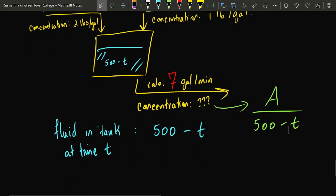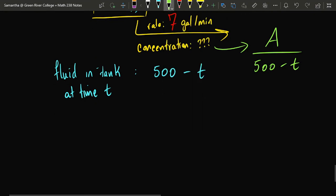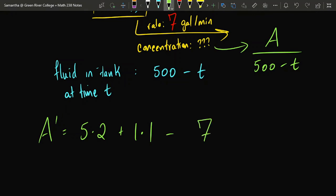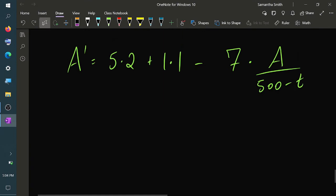That's really the only significant change. This time, to find the concentration of the fluid flowing out, we divide by the non-constant function 500 minus t. All other basic principles remain the same — salt in and salt out are still found by multiplying fluid rate by concentration. Salt in is still 11 pounds per minute. For salt out, the fluid flow rate is 7, multiplied by A divided by 500 minus t. Let's rearrange this and solve carefully.